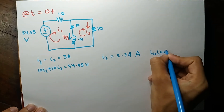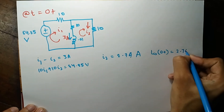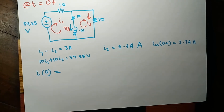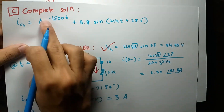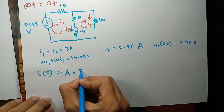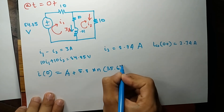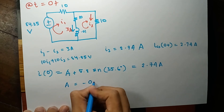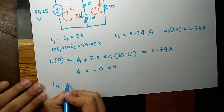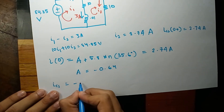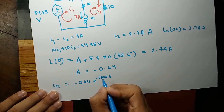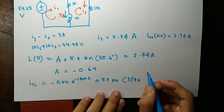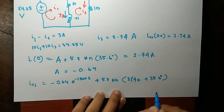Solving the simultaneous equations we get I2 equals 2.74 amps. So the current through this branch at t equals 0 is 2.74 amps. Now in our complete solution we put t equals 0: A plus 5.8 sin(35.6°) must equal 2.74 amps, so A turns out to be minus 0.64. Therefore the total complete solution is: −0.64 e^(−1500t) + 5.8 sin(314t + 35.6°).